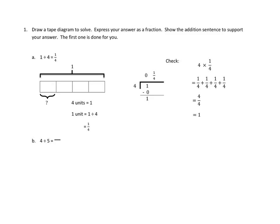Let's take a look at problem number 1. We're actually going to do 1B, but we're going to take a look at 1A to see how they did theirs. Here's the directions: draw a tape diagram to solve, express your answer as a fraction, show the addition sentence to support your answer. The first one is done for you. So let's see what they did here for 1A. The number sentence first was 1 divided by 4, and they noticed that that's the same as the fraction 1 fourth. So they have the whole, which is 1, and they divided that up into 4 sections, or 4 units. So they did divide up 1, 2, 3, 4, because it's 1 divided by 4.